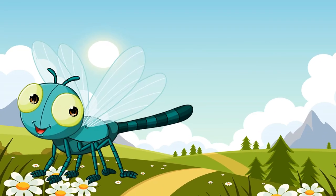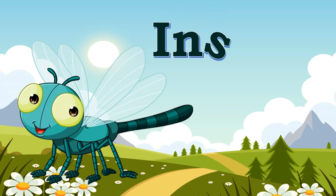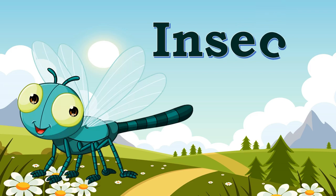How about this one? What picture do you see? That's right, an insect. Let's spell the word insect. I, N, S, E, C, T — insect.